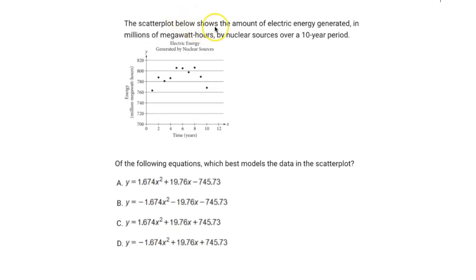This problem shows a scatter plot of the amount of electric energy generated in millions of megawatt hours by nuclear sources over a 10-year period. You can see we have a quadratic function represented. It asks which of the following equations best models the data in the scatter plot.